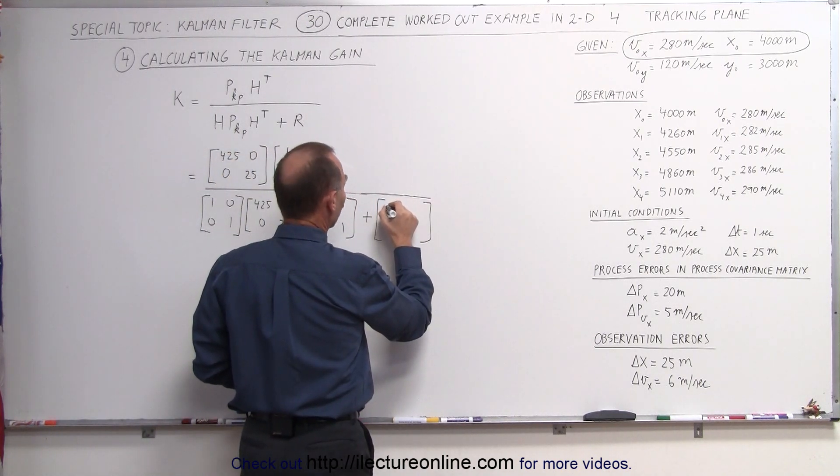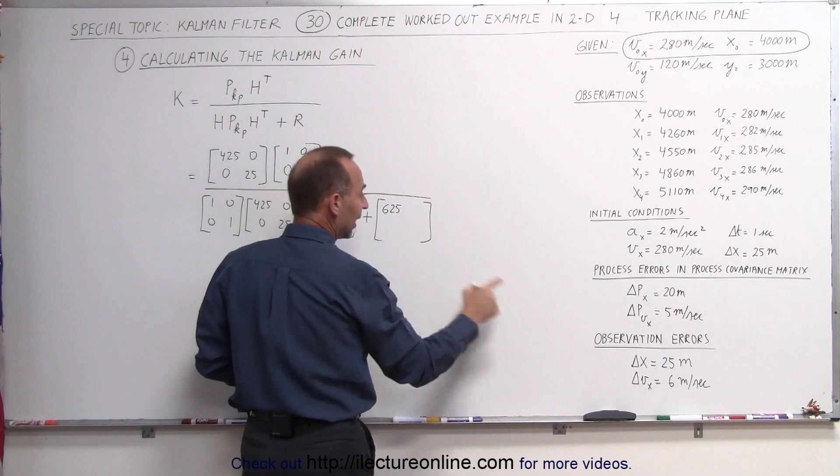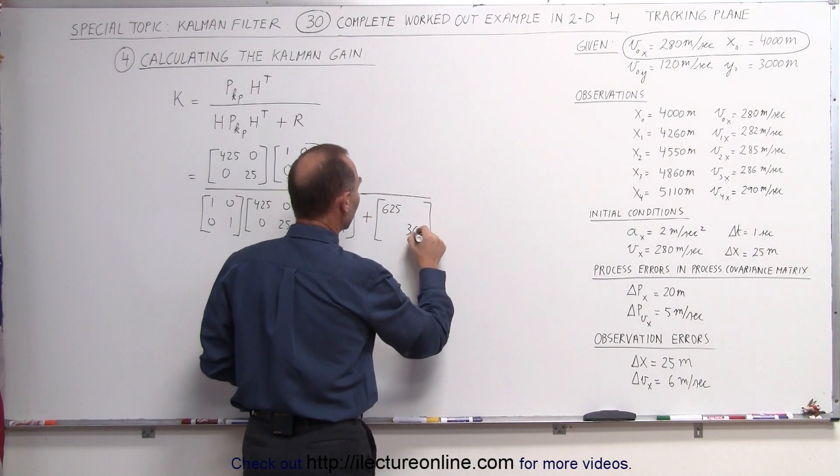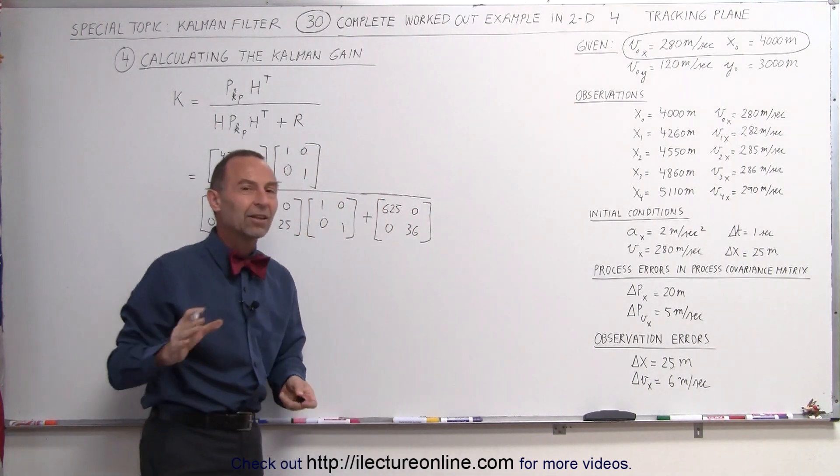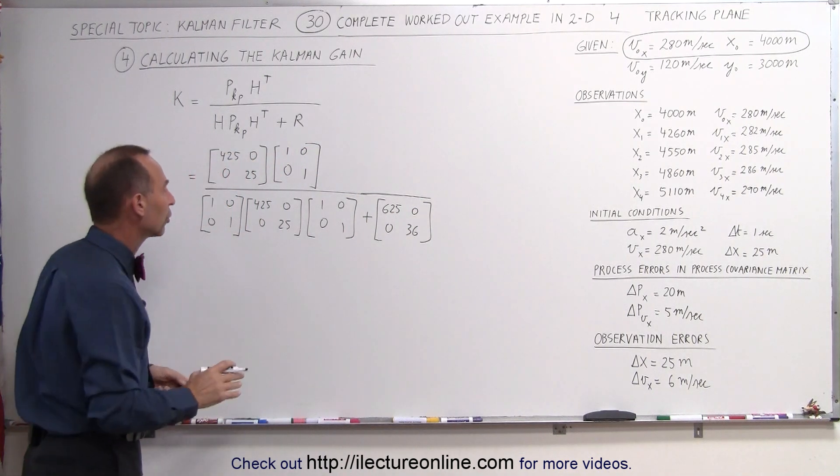So this becomes 25 squared, which is 625, and this becomes 6 squared, which is 36, and we'll put in zeros for the cross terms. Again, in this example we're simply going to ignore the cross terms.